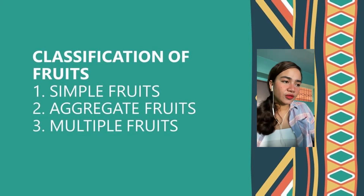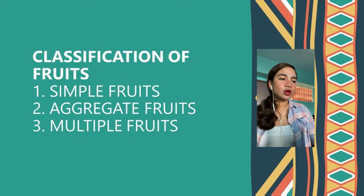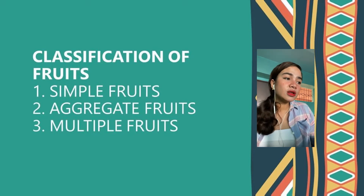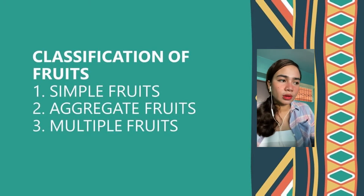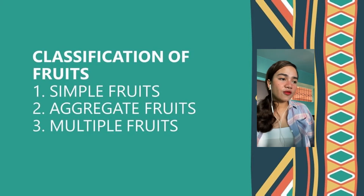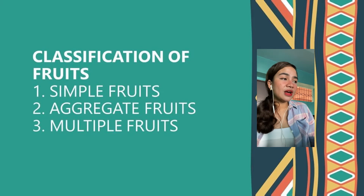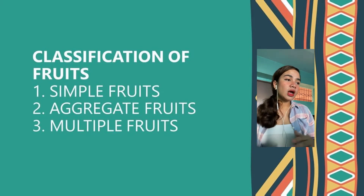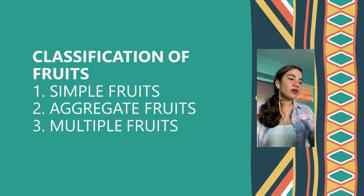Aggregate fruits develop from several ovaries in one flower. They include blackberries, raspberries, and strawberries. Multiple fruits develop from a cluster of several flowers; for example, pineapples and figs. Those are the classifications of fruits.